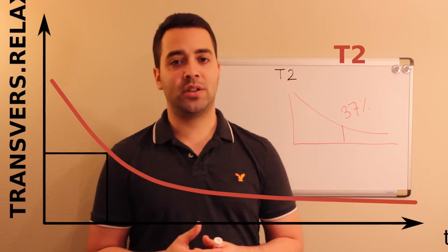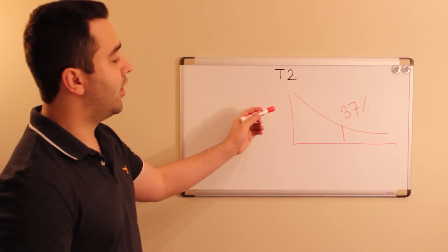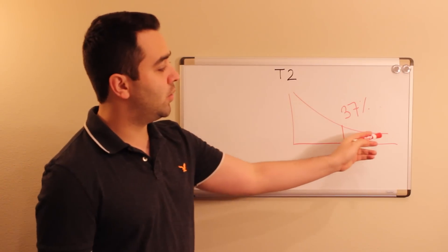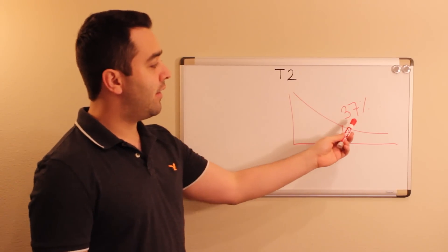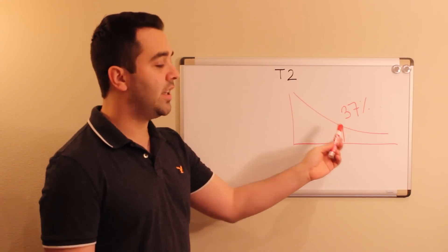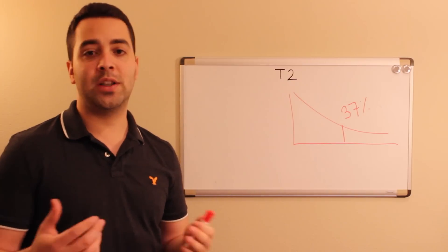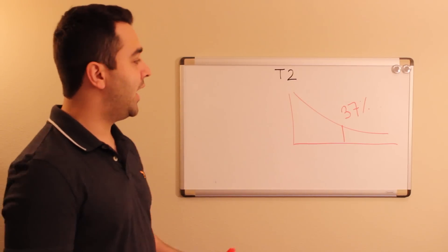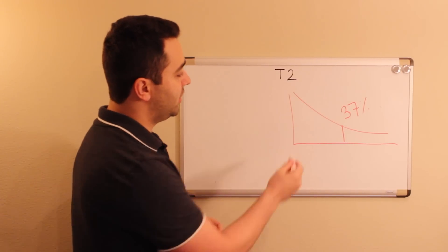That T2 decay or T2 loss is what I'm showing here. This is an average T2 weighted curve, and the 37% is defined as a T2 interval for a specific tissue. Different tissues will have different curves for T2.